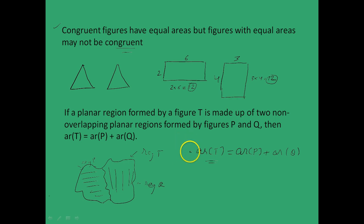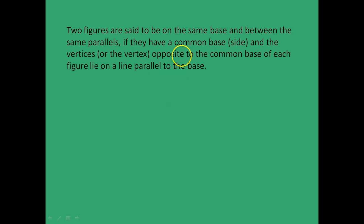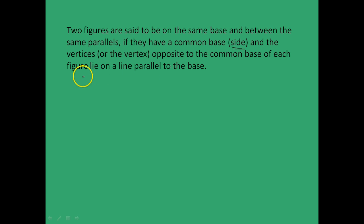In this chapter we will be encountering a lot of theorems which are true for two figures that are between two parallels and on the same base. We will first explore what it means to be on the same base and between two parallels. Two figures are said to be on the same base and between the same parallels if they have a common base — that is, a common side — and the vertices opposite to the common base lie on a line parallel to the base.